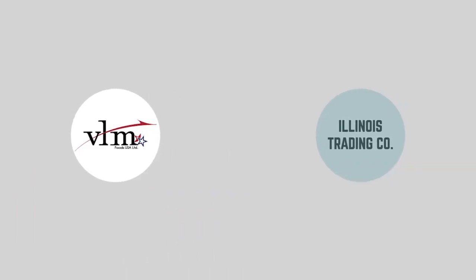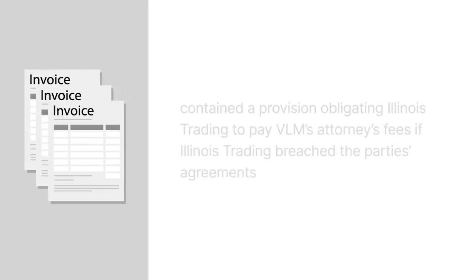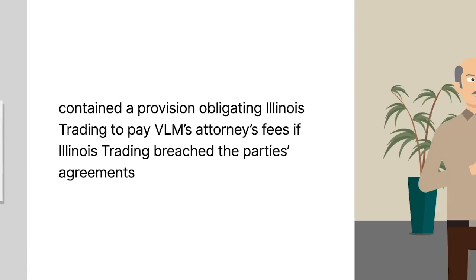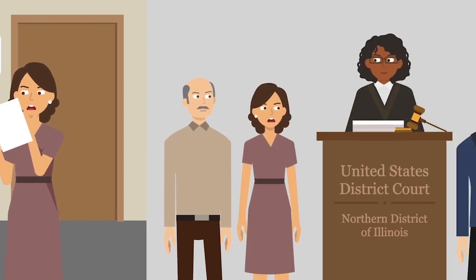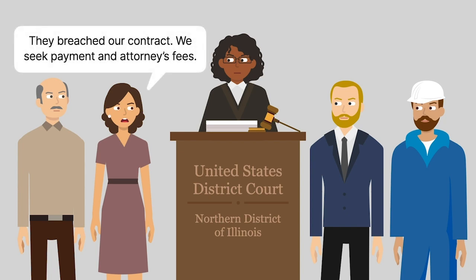Finally, VLM mailed an invoice to Illinois Trading. The trailing invoices contained a provision obligating Illinois Trading to pay VLM's attorney's fees in the event that Illinois Trading breached the party's agreements. Illinois Trading paid the first nine invoices but failed to pay the next nine. Accordingly, VLM sued Illinois Trading in federal district court for breach of contract, seeking payment and attorney's fees.